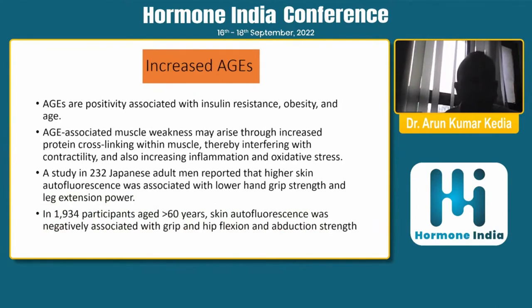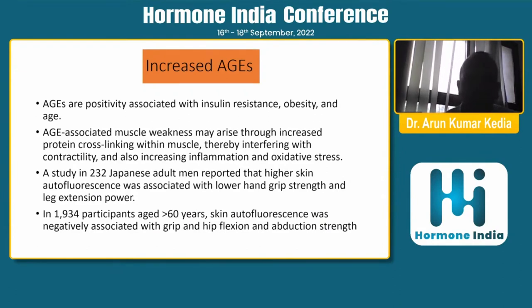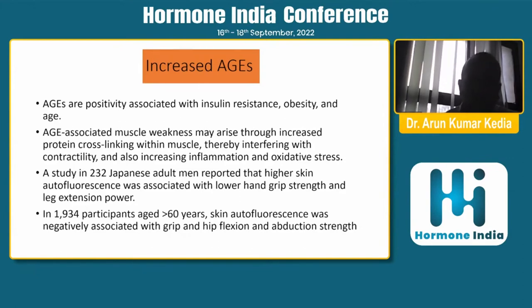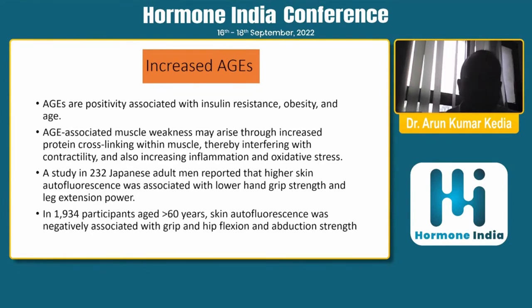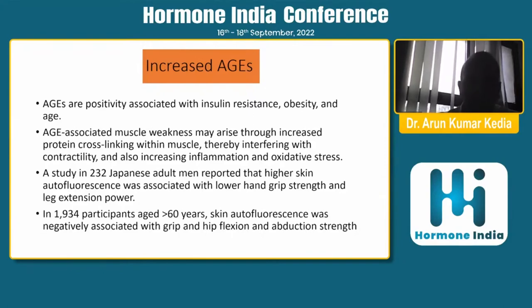Diabetes is associated with increased advanced glycation end products (AGEs), which are positively associated with insulin resistance and obesity. These AGEs lead to increased protein cross-linking within muscles, interfering with contractility, increasing inflammation, and increasing oxidative stress. A study in Japanese adults showed that higher skin autofluorescence — a surrogate marker for AGEs — was associated with lower hand grip strength, leg extension power, abduction strength, and hip flexion.